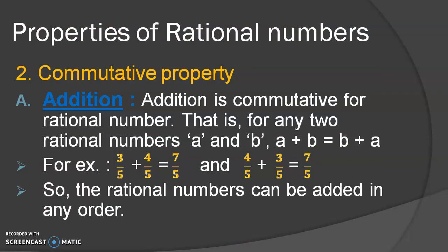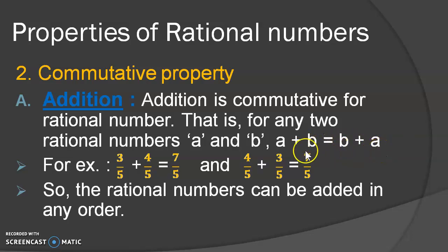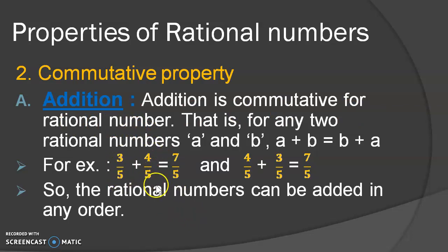Next is the commutative property. What do you mean by commutative? It means it is related to the order of two numbers. Consider any two rational numbers A and B. If we add A to B, then the obtained result will be the same as adding B to A. That is, A plus B equals B plus A. Hence, we can say that addition is commutative for rational numbers. For example, if I add 3 upon 5 to 4 upon 5, the answer is 7 upon 5. If I interchange it and add 4 upon 5 to 3 upon 5, the answer is also 7 upon 5. Hence, rational numbers can be added in any order and the answer will be the same.